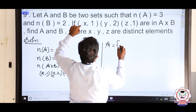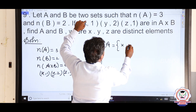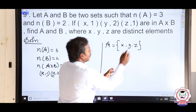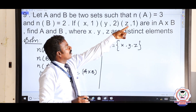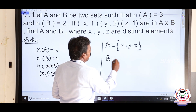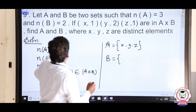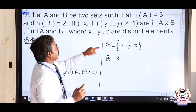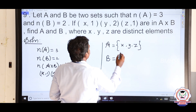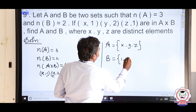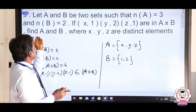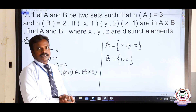So A has 3 possible elements — x, y, z — and N(A) = 3. Set B = {1, 2} and N(B) = 2, there are only 2 elements. Therefore set A = {x, y, z} and set B = {1, 2}. These are the answers — we are asked to find A and B, and we have found them. That is it.